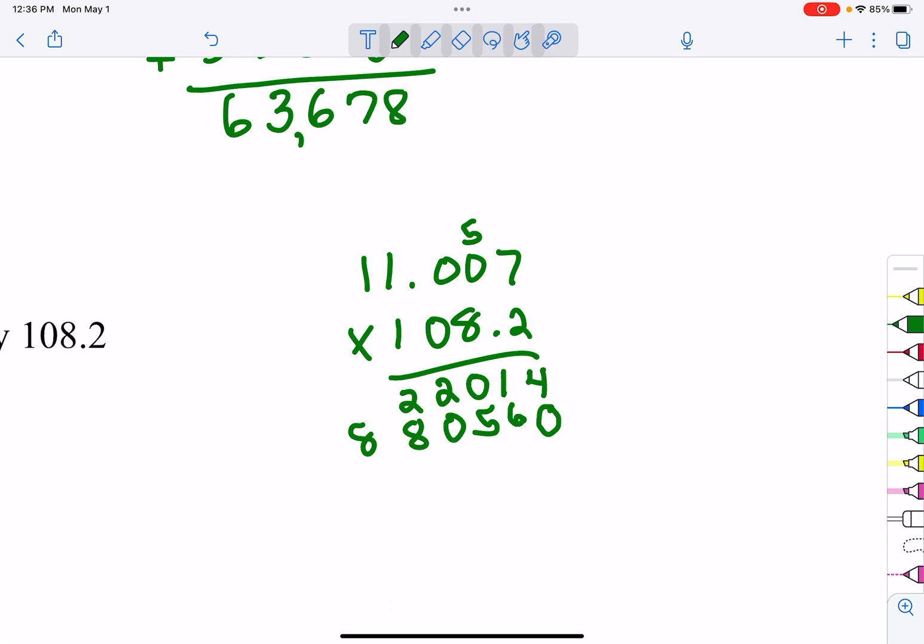Now our next digit is a 0, but it was 2 digits over. You can just put 0s across the board if you want, or you can say I'm on to my third number, so I can put a third 0 and start with my 1. So it's going to go 7, 0, 0, 1, and 1.